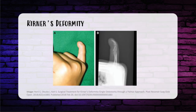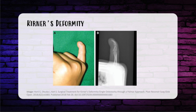Kirner's deformity involves excessive volar radial curvature of the distal phalanx with deviation of the DIP of the small finger and a clubbed or beaked appearance of the fingernail. Kirner's has a volar radial curve versus the lateral curves seen in clinodactyly. On x-ray you see widening of the physeal plate, lengthening of the volar lip, with curving of the diaphysis of the distal phalanx. It can be familial and present at birth, or progressive starting at age five. Motion at the DIP is preserved, so surgery is usually not needed.